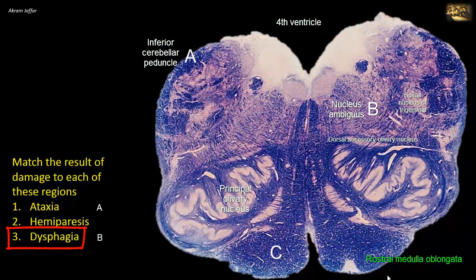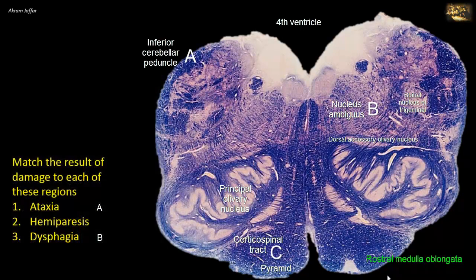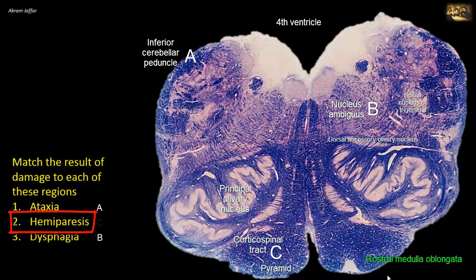C represents the axons comprising the corticospinal tract as they traverse the pyramid. These pyramidal fibers are upper motor neurons that ultimately terminate on contralateral anterior horn cells of the spinal cord. The corticospinal tract conveys motor information for the execution of learned skilled movement, and its damage results in hemiparesis. The word hemi means one side, while paresis means weakness. Because the tract is crossed, the weakness affects the contralateral side of the body.